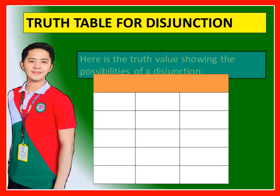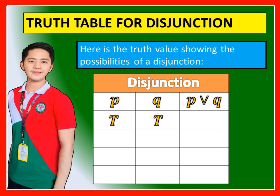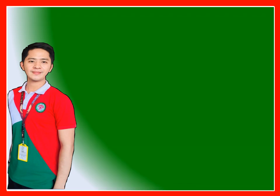Truth table for disjunction: There are three columns — for P, for Q, and for P or Q. When both components are true, the result is true. When one is true, the result is true. When the other is true, the result is also true. When there is no true at all, the result is false. In disjunction, if at least one of the components is true, the disjunction is true; otherwise it is false.